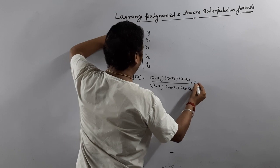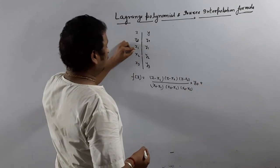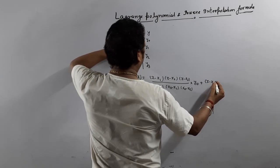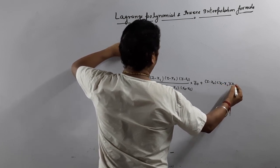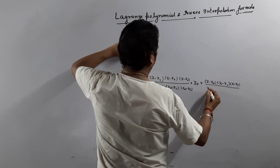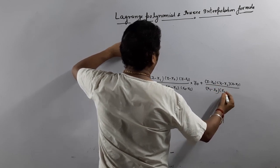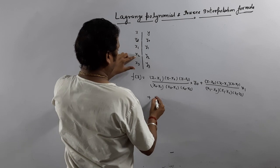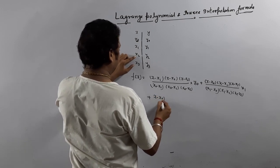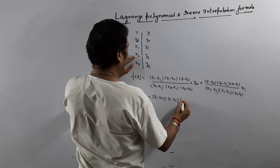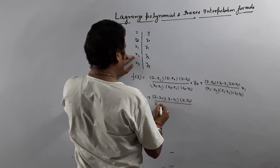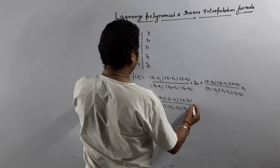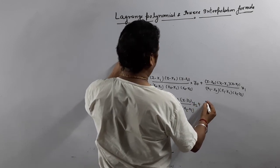Multiply the corresponding value by y1. Similarly, for the second term with x1 closed, what you find is: x minus x0, x minus x2, x minus x3, divided by x1 minus x0, x1 minus x2, x1 minus x3, multiplied with y1. Plus: x minus x0, x minus x1, x minus x3, divided by x2 minus x0, x2 minus x1, x2 minus x3, multiplied with y2.